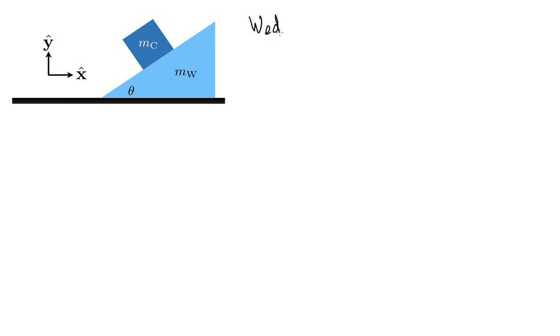As per usual, we're going to draw a free body diagram for the wedge and for the cube. Here's the wedge. Here's the cube. They both have weight exerted on them: MC times G for the cube, M wedge times G for the wedge.